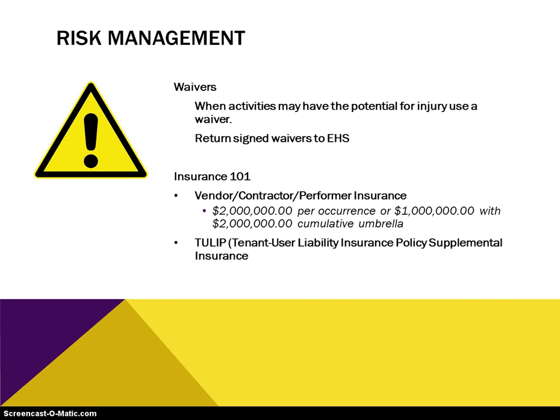The third way is through insurance. As part of the state of Minnesota, the university requires vendors to carry two million dollars per occurrence insurance, or one million dollars with a two million dollar cumulative umbrella. If you are contracting with an inflatable vendor or someone offering go-kart rides on campus, they must meet this requirement. If they don't have it, you cannot contract with them.